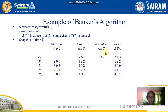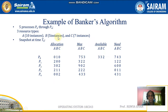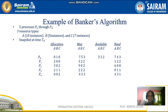The third column indicates currently available resources. Total 10 instances of A were there. Out of 10, how many are allotted? 0 plus 2 plus 3 plus 2 equals 7 allotted. So 10 minus 7 gives currently available A as 3. For B, total 5 instances, 1 plus 1 equals 2 allocated, so 5 minus 2 is 3. For C, total 7 instances, 2 plus 1 plus 2 equals 5 allotted, so 7 minus 5 gives currently available C as 2. This is the current scenario.